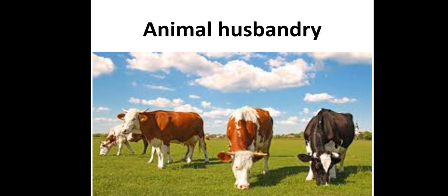Next is animal husbandry. From the name you can tell it deals with animals. Previously in agriculture we covered both plants and animals. Similarly, animal husbandry is a branch of agriculture, but it focuses only on animals.